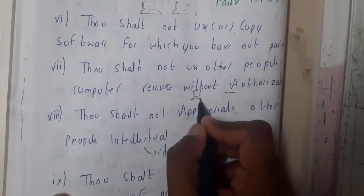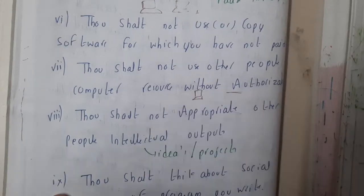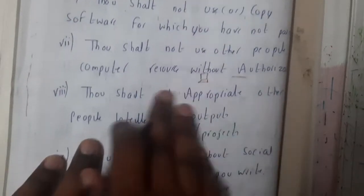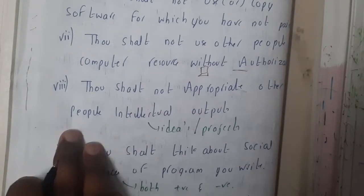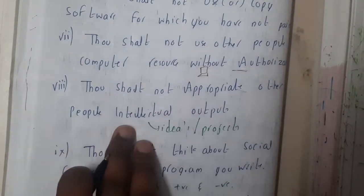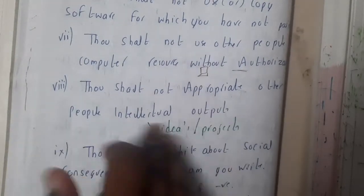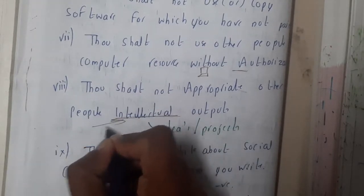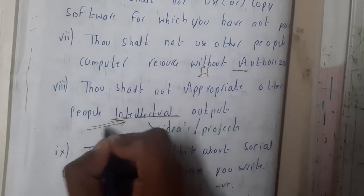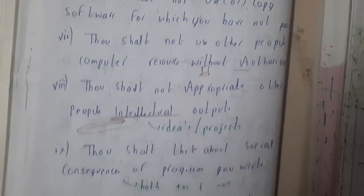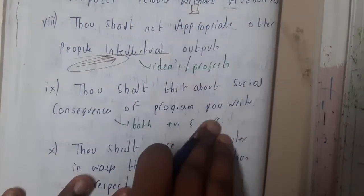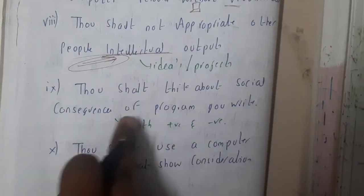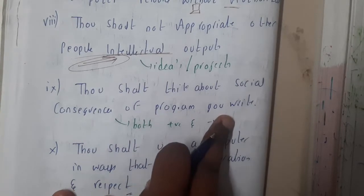Without being an authorized user of a system, do not use it. The seventh commandment: do not appropriate other people's intellectual outputs. Intellectual output refers to your ideas, projects, and creations — do not copy someone else's ideas.